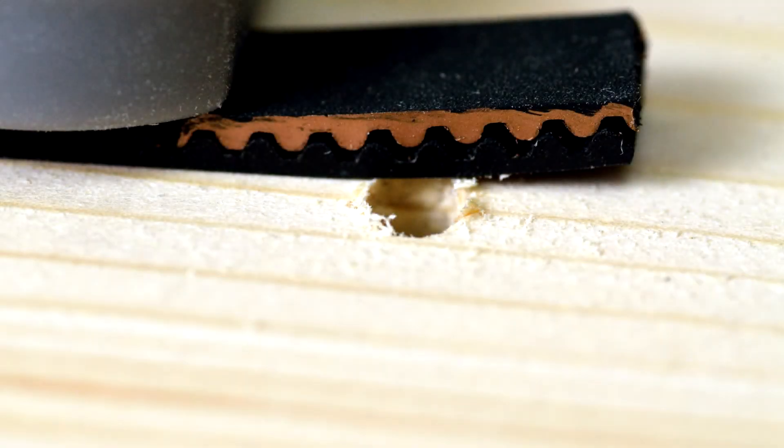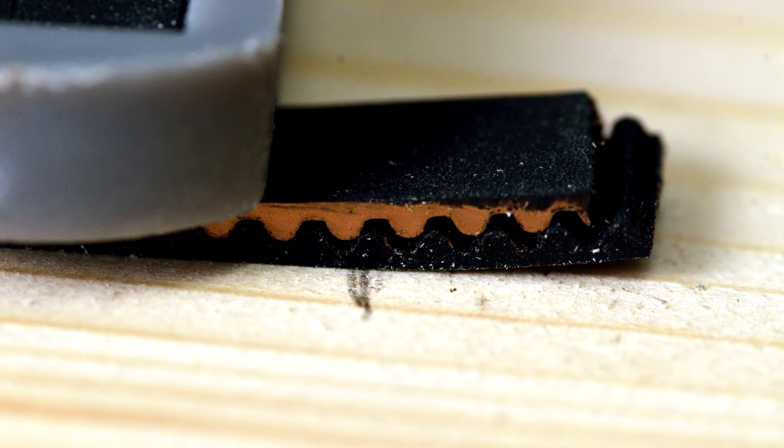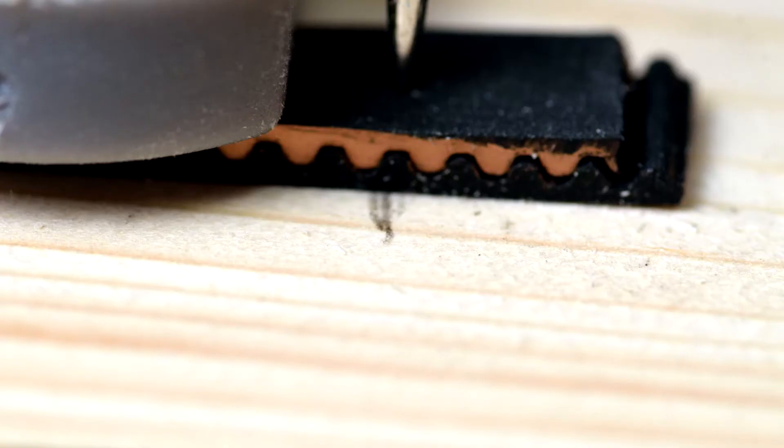While you can order specific length closed loop GT2 drive belts, I made some from a length of belt I had for another project. Just position the stepper a little closer to the large pulley than the center of its travel. Then loop some belt around both pulleys, pinching the belt together with about an inch of overlap, with the teeth interlocking.